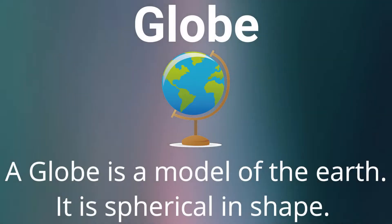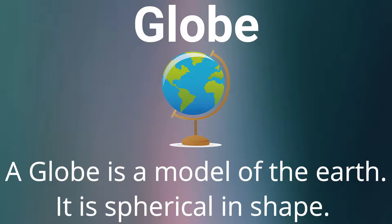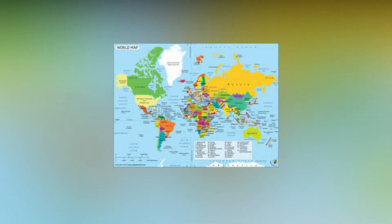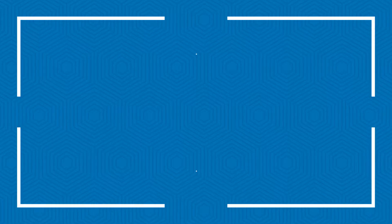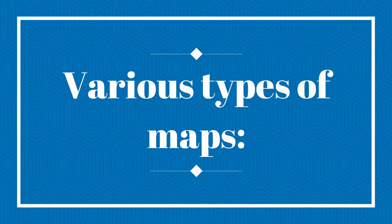A globe is a model of the earth. It is spherical in shape. A map is a drawing of the earth on a flat surface such as paper.